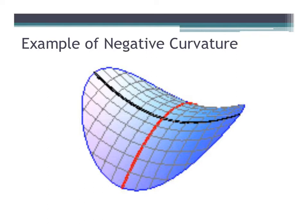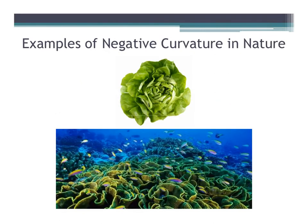If you start at the front of the saddle and move toward the back, you first have to move downward and then upward. However, if you start at the right and move to the left, or left to the right, you have to travel upward and then downward, so the direction is different. Examples of negative curvature in nature include lettuce and a coral reef.